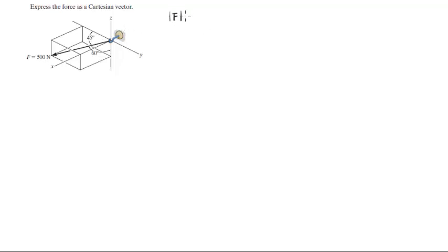Basically you're given the magnitude of the vector at 500 N. And you know the angle that it forms. We got an X component, a Y and a Z.